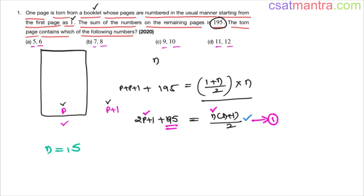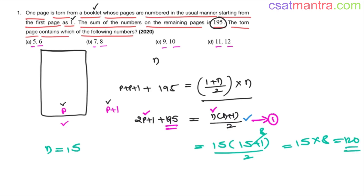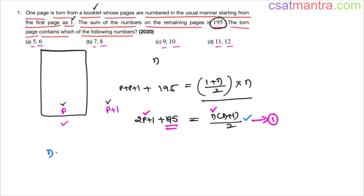Let's try n = 15: 15 × 16/2 = 120. Again, 120 is less than 195, so the total sum on all pages is still less than the sum on the remaining pages. This is absurd, so n cannot be 15 either.